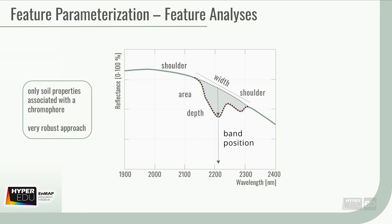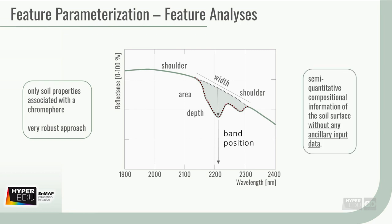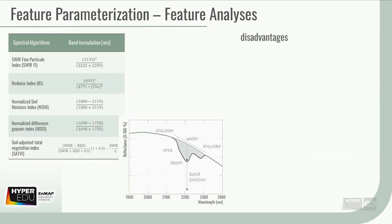This approach can be used only when you are looking at a soil property associated with a chromophore, a direct response on the soil spectrum. This method is very robust and a frequently used approach that allows more accurately determined, semi-quantitative compositional information of the soil surface without any ancillary input data. A disadvantage of spectral feature analyses and spectral indices is that they are only proxies for complex mixtures of soil properties.